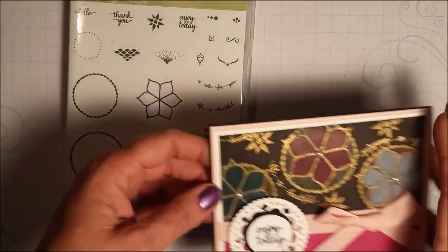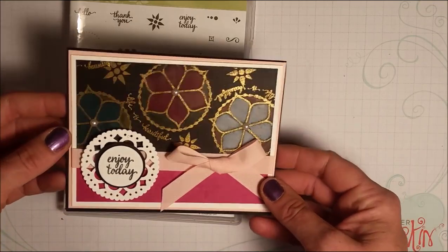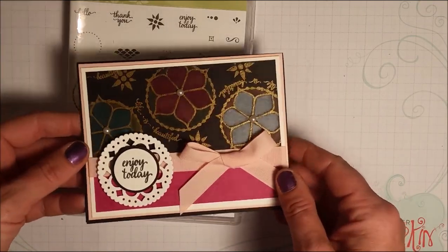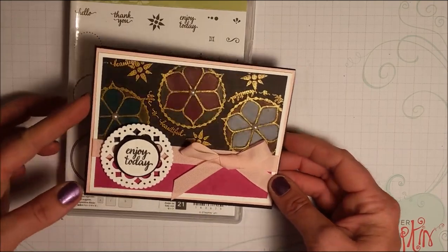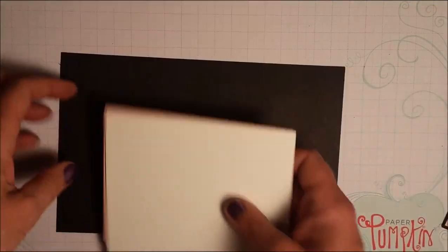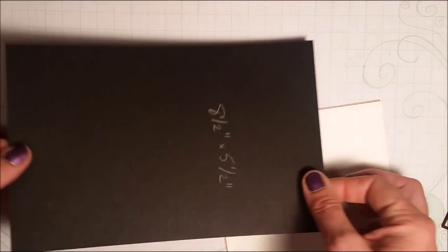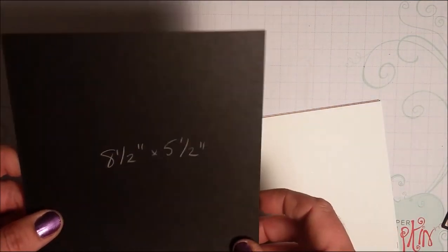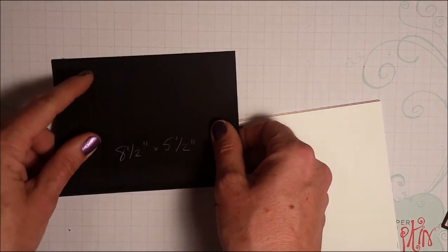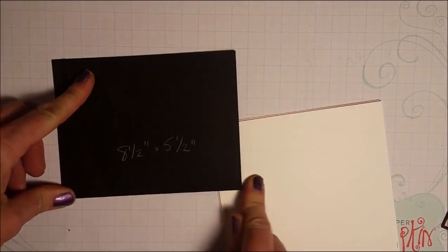I'm going to show you the card that I've made today using this bundle using a little bit of the black magic technique, so let's get started. The card base is a piece of basic black and it measures eight and a half by five and a half which you're going to fold in half.